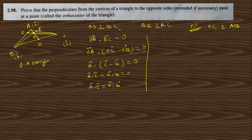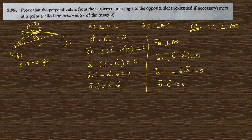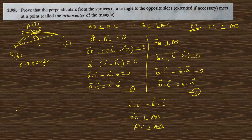Similarly, since OB is perpendicular to AC, OB dot AC equals zero. So b·c minus b·a equals zero, meaning b·c equals b·a. From equations one and two, a·c equals b·c, which means OC is perpendicular to AB. So CF is perpendicular to AB, and the perpendiculars from the vertices of a triangle are concurrent.